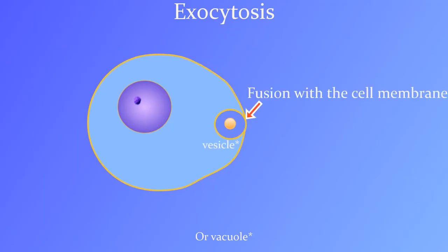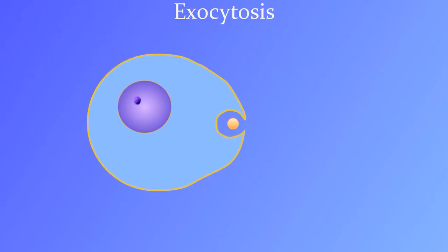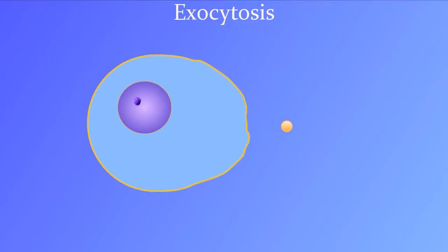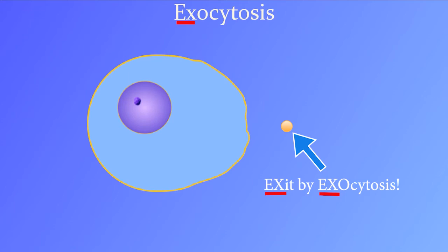As you can see, this allows the stuff out. Cells do exocytosis to get rid of large waste particles or to secrete proteins or hormones, like insulin for example, that need to be released outside of the cell.